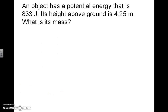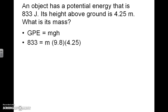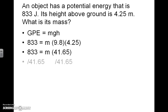Here's the next question: An object has a potential energy of 833 joules. Its height above the ground is 4.25 meters. What is its mass? We're solving for mass using the gravitational potential energy equation and making these substitutions. We simplify the multiplication on the right side using a calculator, then divide both sides of the equation by that product. Doing 833 divided by 41.65 gives a final mass of 20 kilograms.